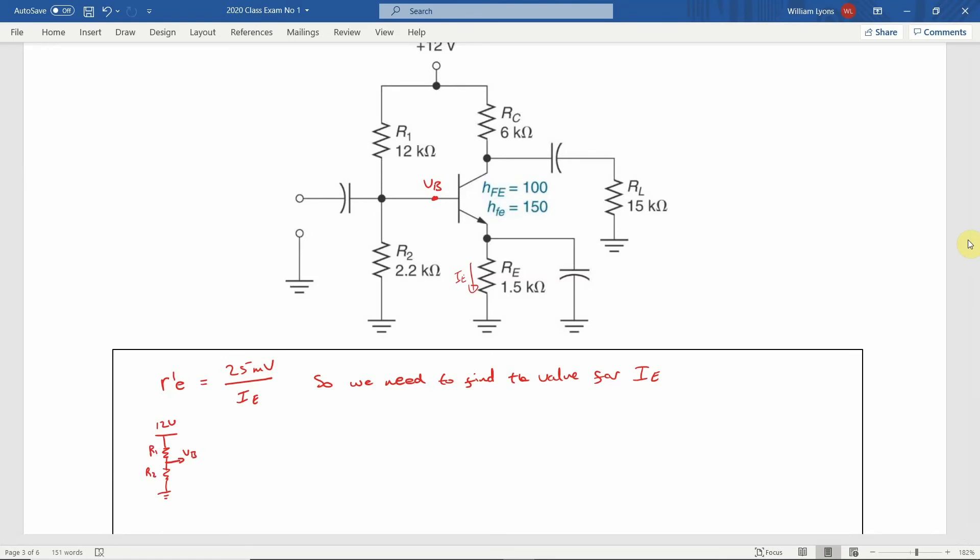This is a voltage divider circuit, so the base voltage VB can be calculated as the power supply, 12V, multiplied by R2, in this case 2.2kΩ, divided by R1 plus R2, that's 12kΩ plus 2.2kΩ. This results in a base voltage VB equal to 1.86V.